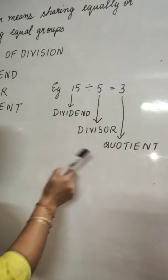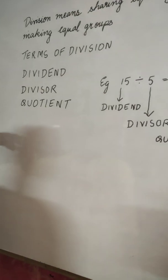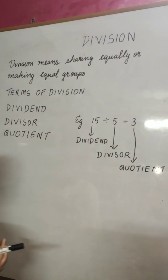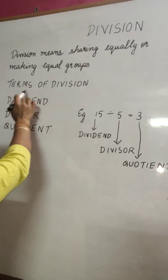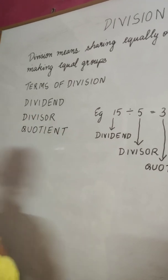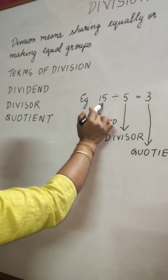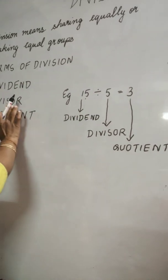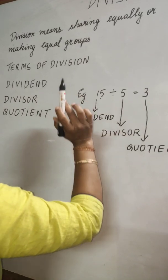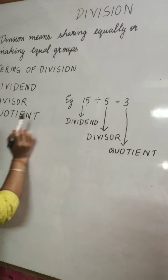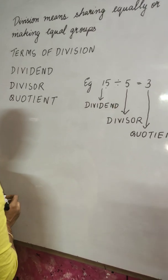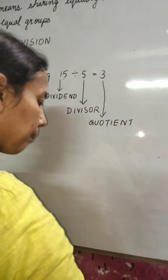So I hope you have understood. Let us make a recap. Division means sharing equally or dividing into equal groups. The terms of division are: dividend — the number to be divided; divisor — the number by which we divide; and quotient — the answer we get. In our example, 15 is the dividend, 5 is the divisor, and 3 is the quotient.